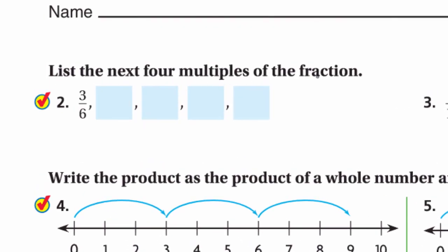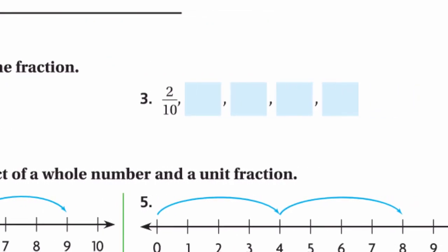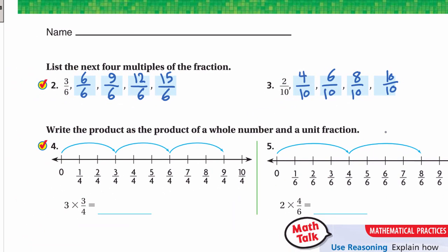List the next four multiples of 3/6: the next multiples are 6/6, 9/6, 12/6, and 15/6. For 2/10: the next multiples are 4/10, 6/10, 8/10, and 10/10. It's like the multiples of 3 — 3, 6, 9, 12, 15 — and the multiples of 2 — 2, 4, 6, 8, 10 — keeping the denominators.